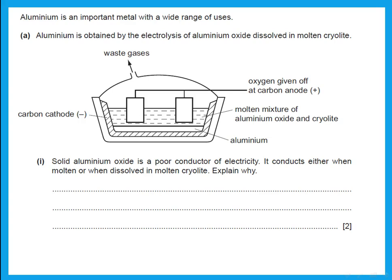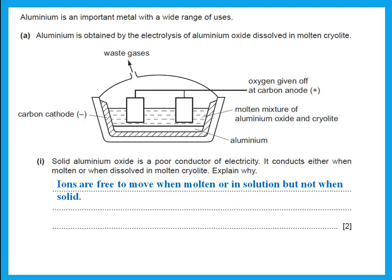Aluminium is an important metal with a wide range of uses. Solid aluminium oxide is a poor conductor of electricity; it conducts either when molten or when dissolved in molten cryolite — explain why. This is because the ions are free to move when molten or in solution, but not when solid.